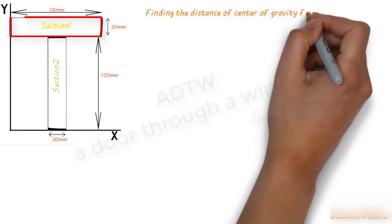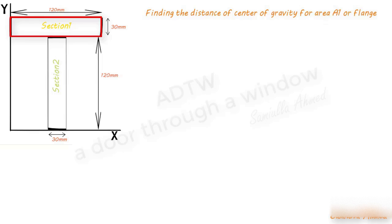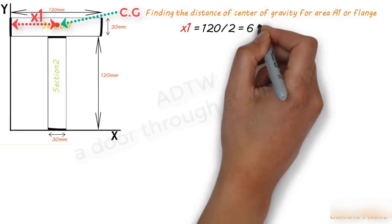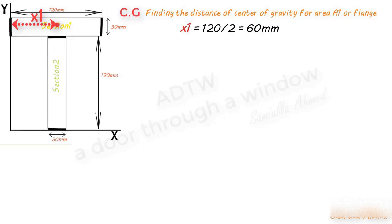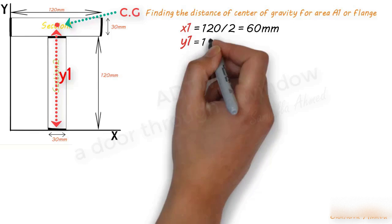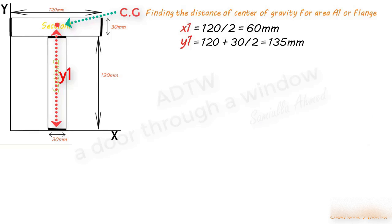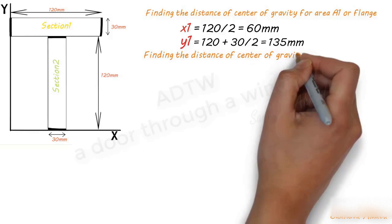The center of gravity of Section 1 lies approximately at its center, as shown by the red dot. The distance of the CG from the Y-axis, denoted x1, is 120 mm divided by 2, which equals 60 mm. The distance of the CG of Section 1 from the X-axis, denoted y1, equals 120 mm plus half of 30 mm, which equals 135 mm.